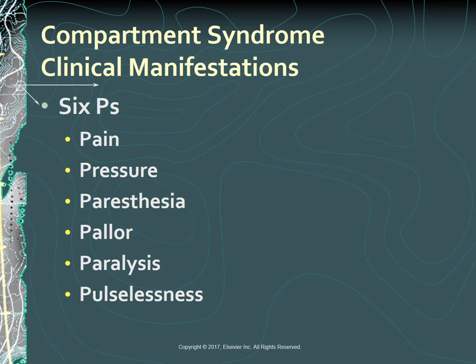Know your six P's, which are characteristic of compartment syndrome: pain out of proportion to the injury, not managed by opioid analgesics, and pain on passive stretch of muscle traveling through the compartment; pressure—increasing pressure in the compartment; paresthesia—numbness and tingling; pallor—coolness and loss of normal color to the extremity; paralysis or loss of function; and pulselessness—diminished or absent peripheral pulses.